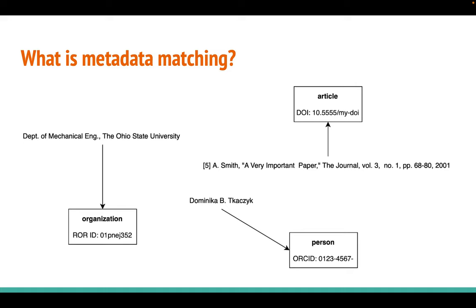Different mentions will of course be matched to different types of items. For example, a citation is usually matched to a scientific paper, an affiliation to an organization, and an author name to a person. Note that when we insert a link between a citation and a cited paper, we also implicitly insert a relationship between a citing paper and a cited paper, because we know which paper contains the citation. The same happens for other types of matching as well.